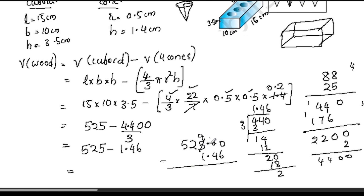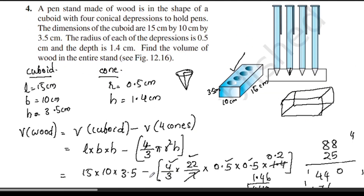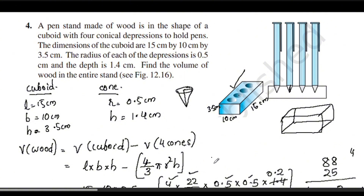Subtracting: 10 minus 6 is 4, 9 minus 4 is 5, 4 minus 1 is 3. The answer is 523.54 cubic centimeters. If there are depressions, subtract their volume from the total. See you in the next video.